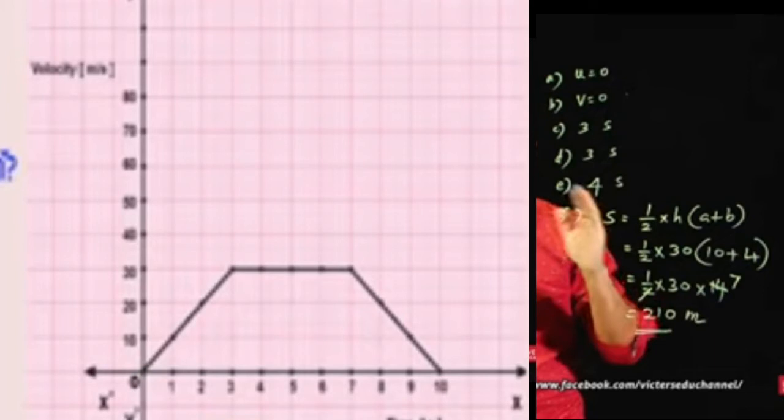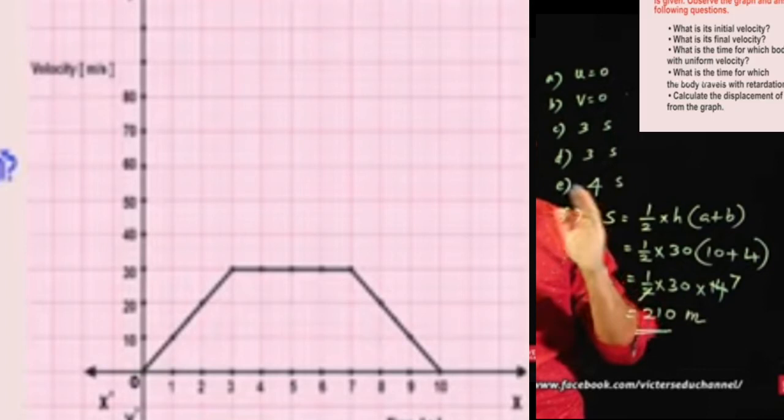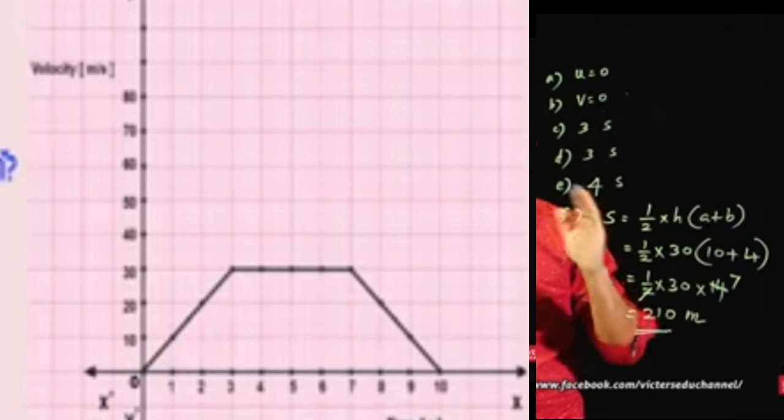The final velocity is 0. That is the final velocity.